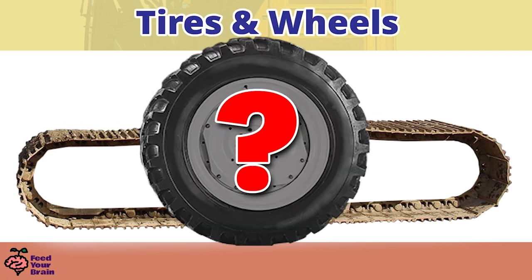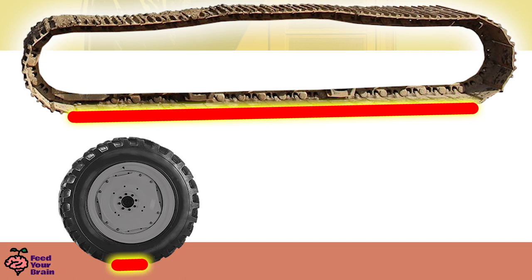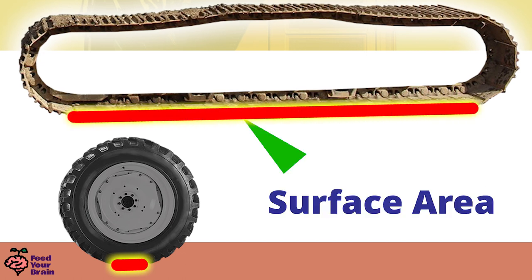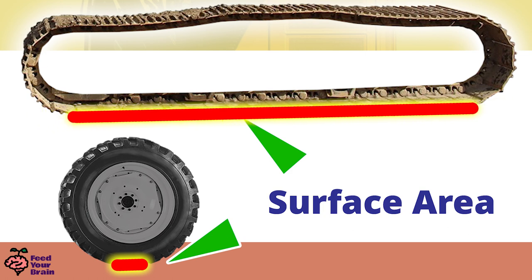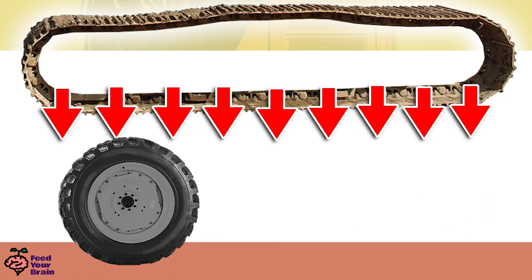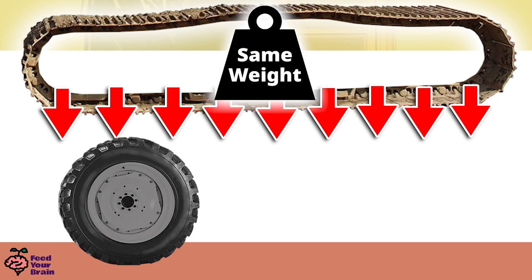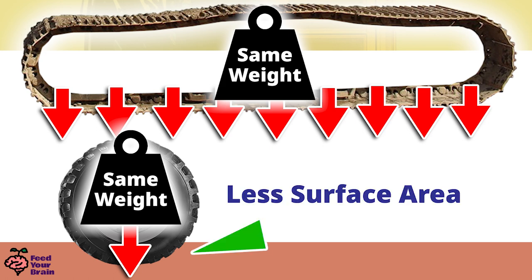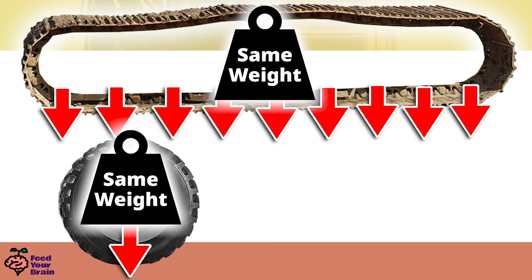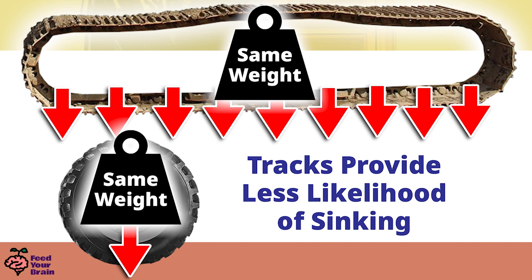Why use tracks instead of wheels? Tracks create a larger surface area than wheels. This long red line illustrates the surface area of the track, and this short red line illustrates the surface area of a wheel. See how much more surface area the track has compared to the wheel? This larger surface area distributes the weight of the vehicle more across the surface it's on. The weight exerted onto the track is distributed across a much larger surface area, whereas the weight exerted onto the wheel is concentrated onto a much smaller surface area. Because of this greater distribution of weight, tracks provide less likelihood of sinking into a soft surface such as sand or snow.